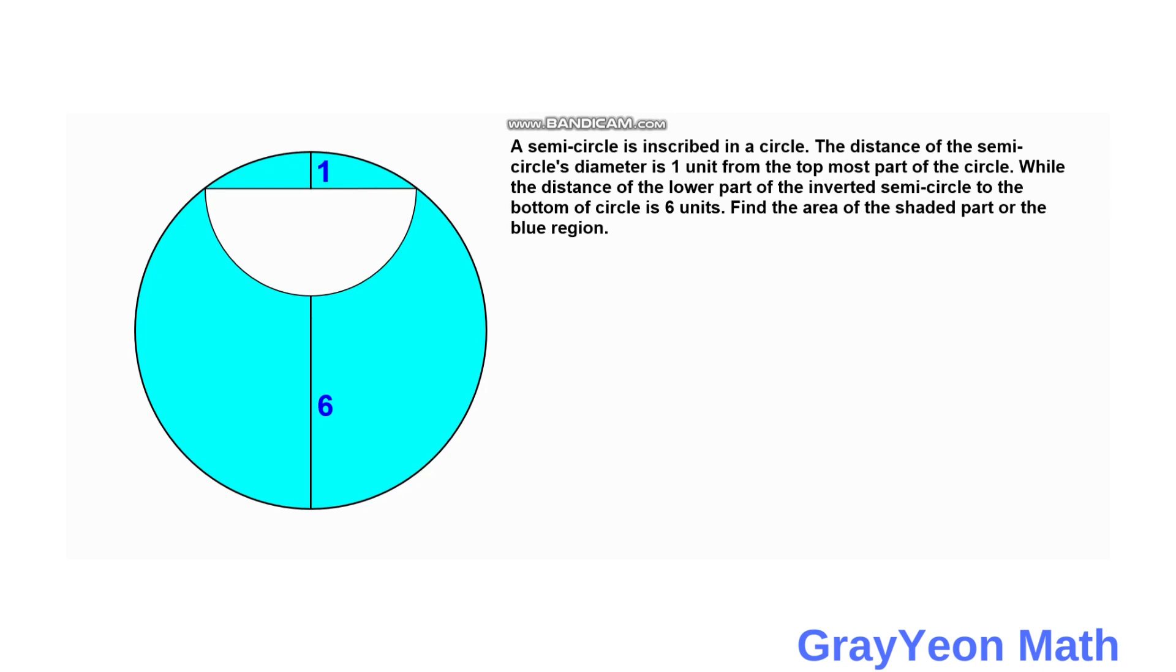Welcome to Grayon Math. We are asked to solve this problem. A semicircle is inscribed in a circle. The distance of the semicircle's diameter is 1 unit from the topmost part of the circle.